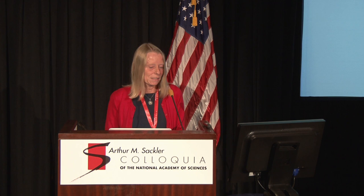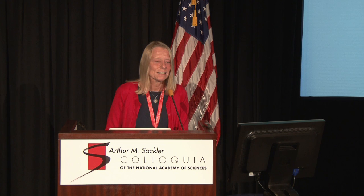So why did I start this work on alpha proteobacteria? A long time ago, Michael Gray, Ford Doolittle, and Carl Woese did sequencing of the ribosomal RNA genes from mitochondria from wheat, and they found it was much more similar to Agrobacterium tumefaciens, which is an alpha proteobacterium. About 20 years ago, it seemed obvious that if we want to learn more about mitochondria, we should sequence some alpha proteobacterial genomes.